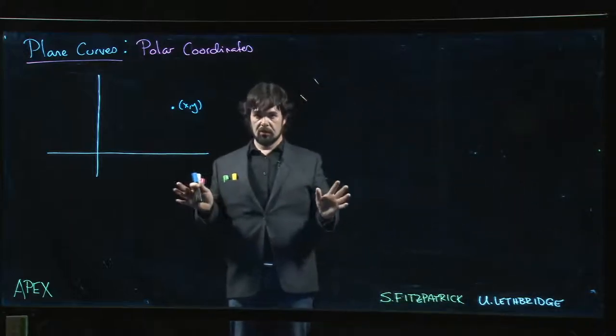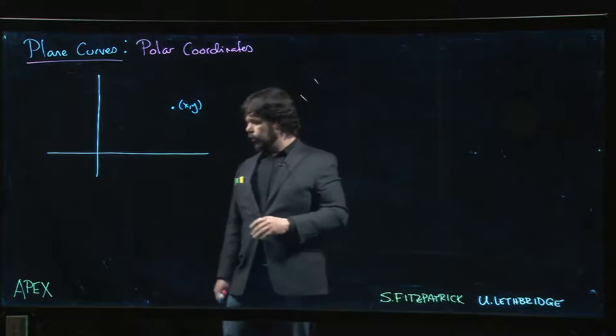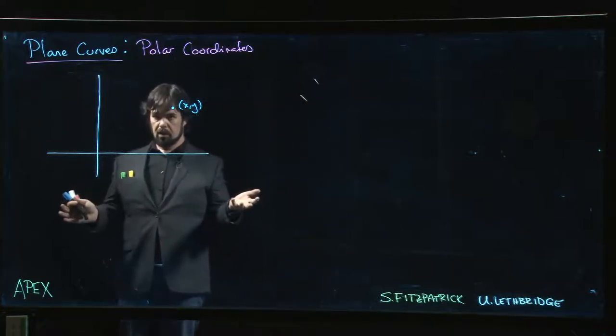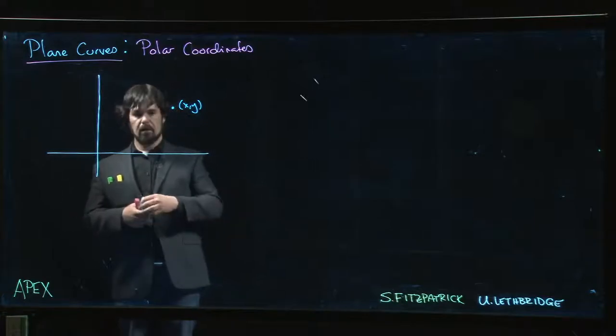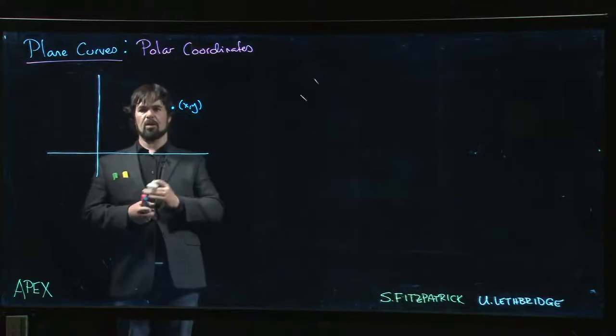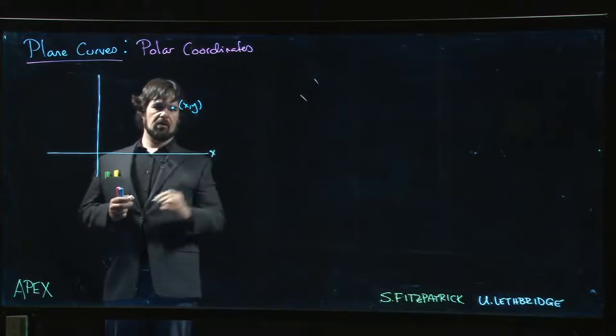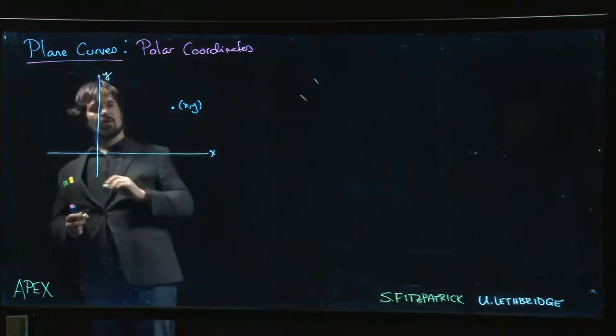Alright, so we're on to the next section which covers polar coordinates. Polar coordinates is an alternative coordinate system that allows you to describe the location of points in the plane. Typically this is something that we overlay on top of the usual rectangular coordinate system, the Cartesian coordinates that we're used to.